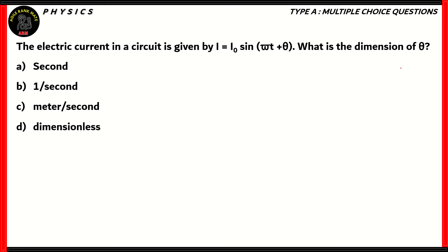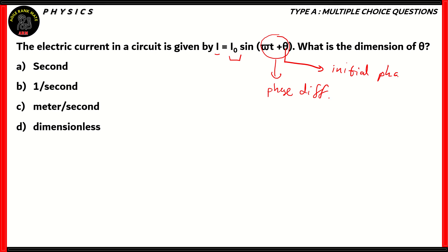Well, before jumping to conclusions, we need to understand what theta is in this particular expression. So I, or the current, stands for I naught, which is the original value of the current, times sine of omega t plus phi. Omega t plus phi is the phase difference. Now, theta by itself refers to the initial phase of the current, and omega t is the expression that dictates what phases it will grow through.